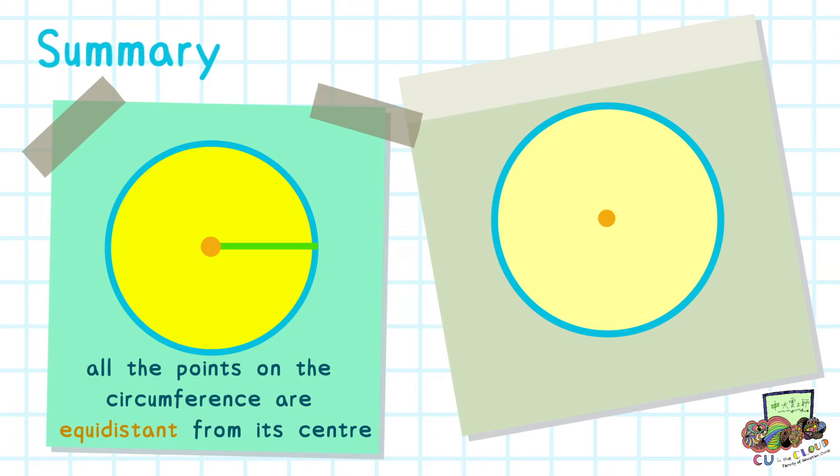Secondly, we have learned radius and diameter. Radius is the length from center to circumference. Diameter passes through the center and touches the circumference, and diameter is twice the length of the radius.